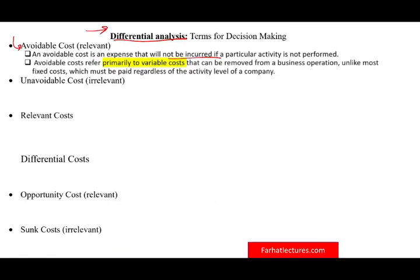Avoidable costs are primarily variable costs — they vary with your production and can be removed from a business operation by stopping the activity. Unlike fixed costs, fixed costs must be paid regardless of the activity level. You might have to pay the rent for the warehouse where you are producing those laptops whether you produce or not, so the rent is a fixed cost and it cannot be avoided, but that microchip can be avoided.